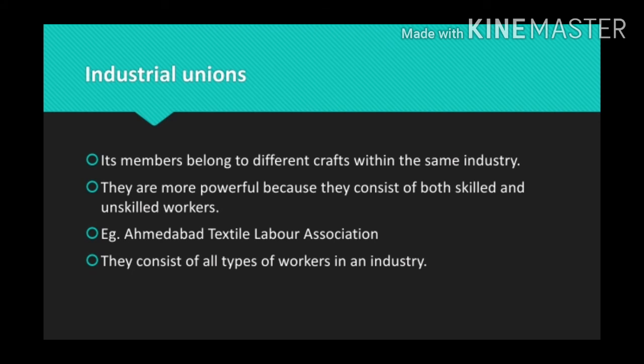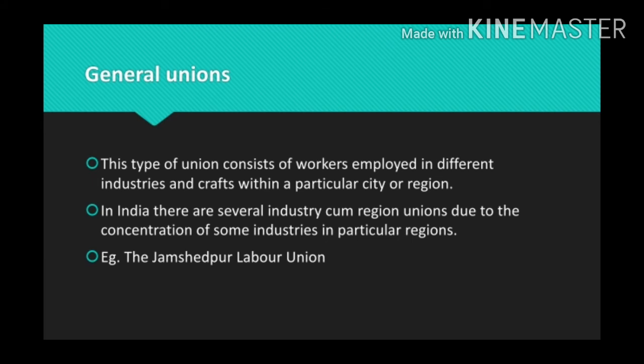Industrial unions are organized on an industry-wise rather than craft-wise basis, and members belong to different crafts within the same industry. They consist of both skilled and unskilled workers. The third type is the general union. A general union consists of workers employed in different industries and crafts within a particular city or region. In India, there are several industry-cum-region unions due to the concentration of industries in particular regions. An example is the Jamshedpur Labor Union.